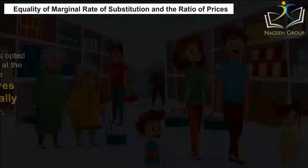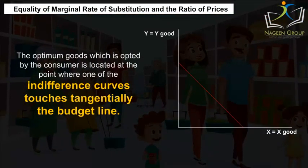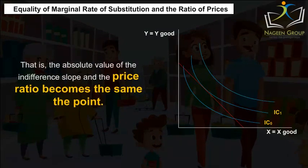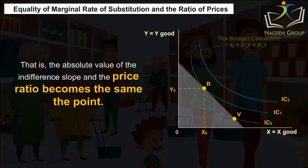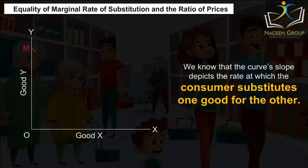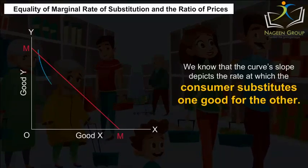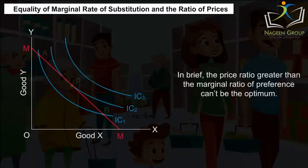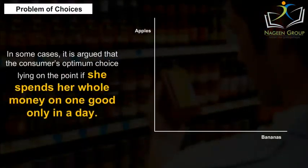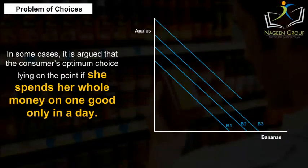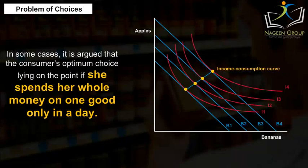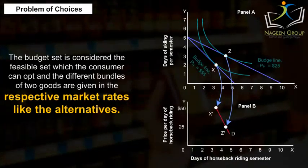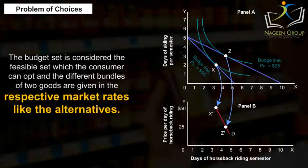Equality of Marginal Rate of Substitution and the Ratio of Prices. The optimum good chosen by the consumer is located at the point where one of the indifference curves touches tangentially the budget line. That is, the absolute value of the indifference curve slope and the price ratio become the same at that point. The curve slope depicts the rate at which the consumer substitutes one good for the other. A price ratio greater than the marginal ratio of preference cannot be the optimum. In some cases, the consumer's optimum choice lies at the point where she spends all her money on one good only.